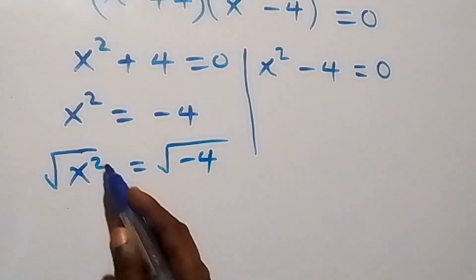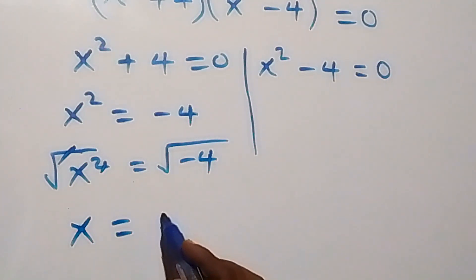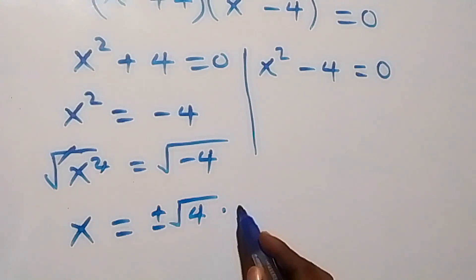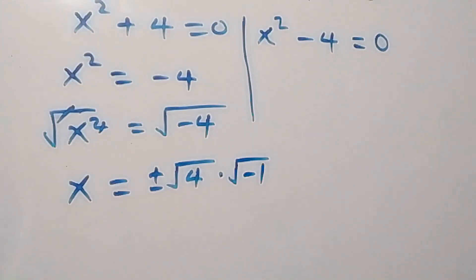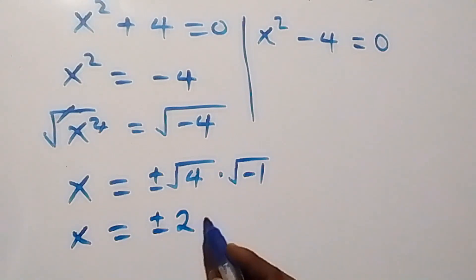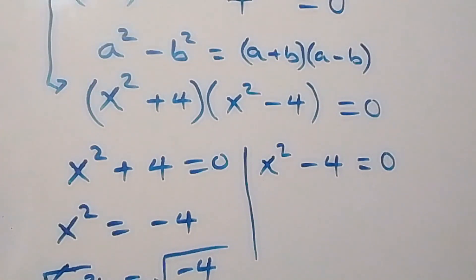The square cancels the square root, giving x equals plus or minus the square root of 4 times minus 1, which is plus or minus 2 times the square root of minus 1. Since the square root of minus 1 is i, we have x equals plus or minus 2i. These are two complex solutions.